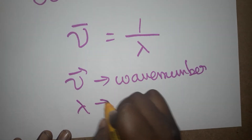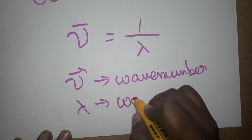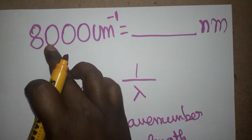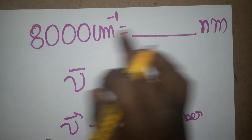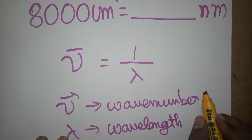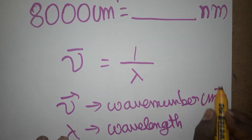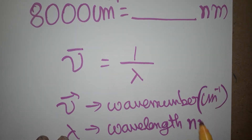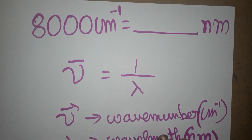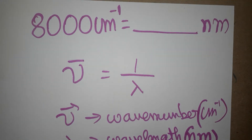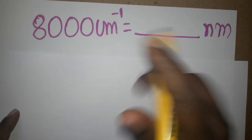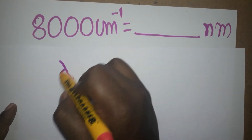Lambda we can take as wavelength. Now we are going to learn how to convert from wave number to wavelength, because centimeter inverse is the wave number and nanometer is the wavelength. This is the conversion we are going to learn. So 8000 centimeter inverse — we are going to find the wavelength.